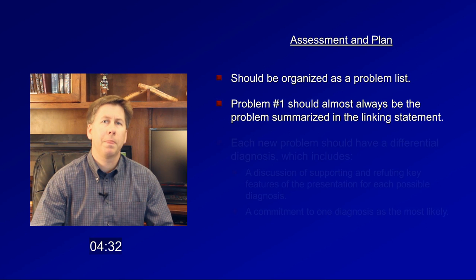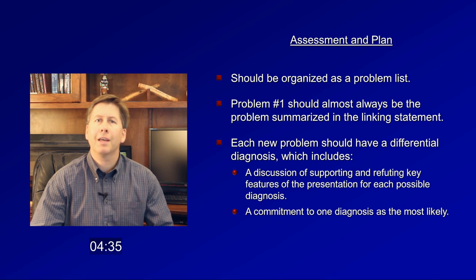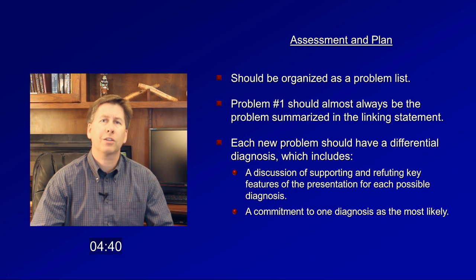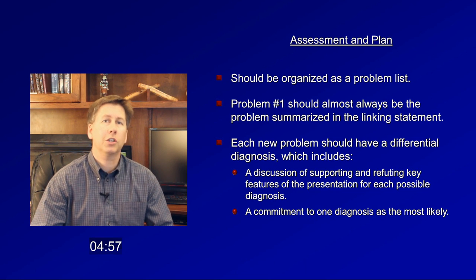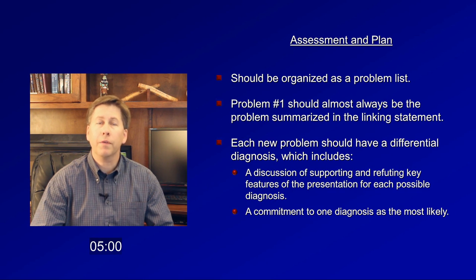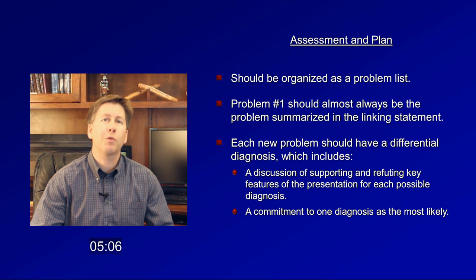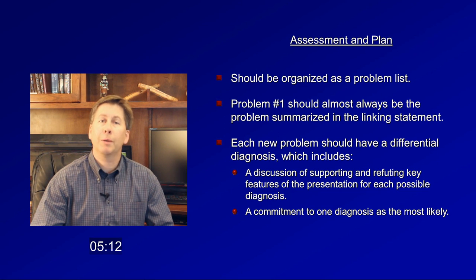Problem number one is her lightheadedness and syncope. Given the combination of orthostasis by history and exam and recent medication change, orthostatic hypotension secondary to amitriptyline is the most likely diagnosis, as this is one of the most frequently observed medications to cause this problem. Closely related is the possibility of autonomic dysfunction from diabetes, as the presence of neuropathy suggests her diabetes has been long-standing and not optimally controlled. Less likely but important is a bradyarrhythmia, such as severe sinus bradycardia or intermittent high-degree AV block — though this is not typically positional as she describes.